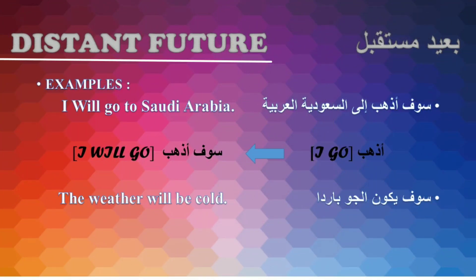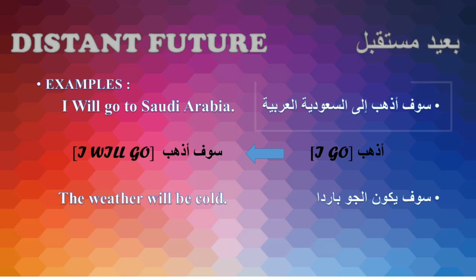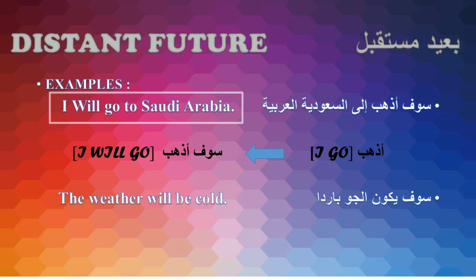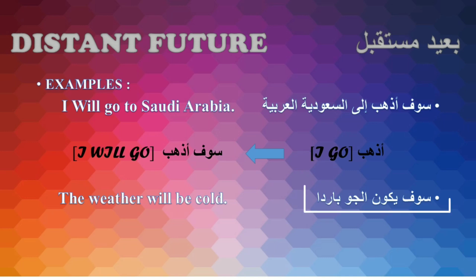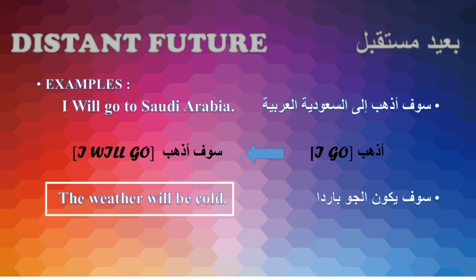For distant future, mustakbil ba'id, we add 'saufa' before the present tense. For example, Saufa az-habu ila Saudi Arabia — I will go to Saudi Arabia. We converted 'az-habu' (I go) to 'saufa az-habu' (I will go), distant future. Similarly, Saufa yakunu al-jawwu baridan — The weather will be cold.